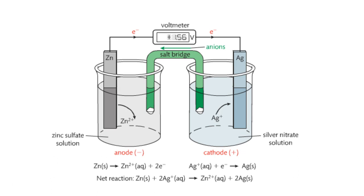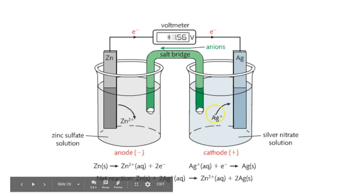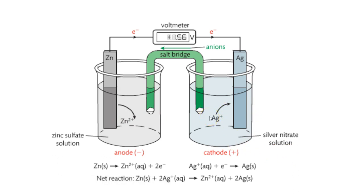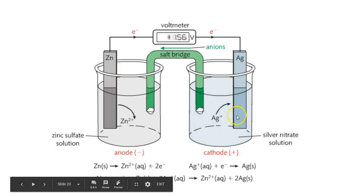Here's another example, but instead of copper, we use silver here. A little more expensive. We still have zinc and zinc sulfate solution. We have silver and silver nitrate solution. That's where we get the silver ions from. Zinc is the more reactive metal, and that's why it's the anode. While silver is the least reactive, so it's the cathode.